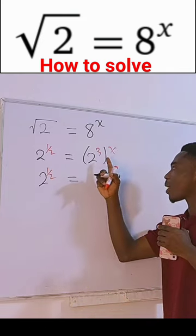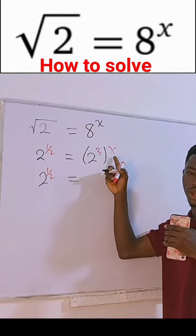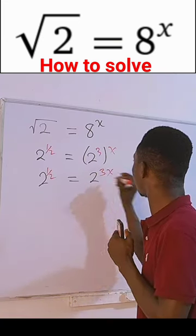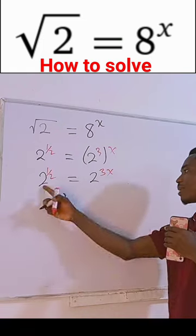Now remember, when we have a number to a power to another power, we can multiply the powers and get 2 to the power 3x. Remember, the bases are the same, so we just have to equate their powers: one-half equals 3x.